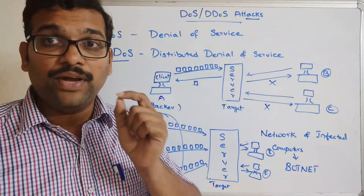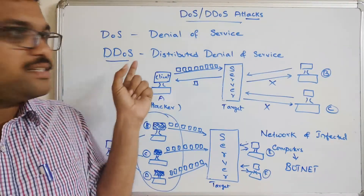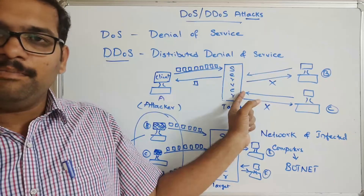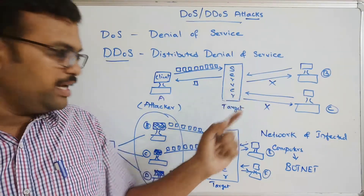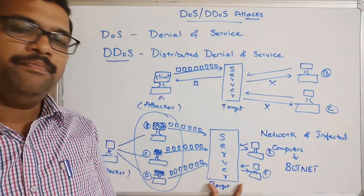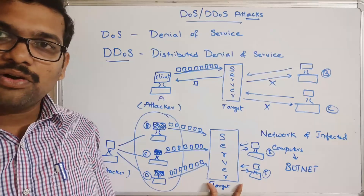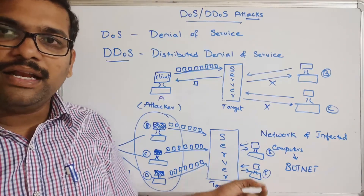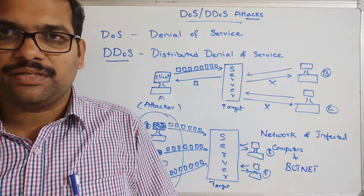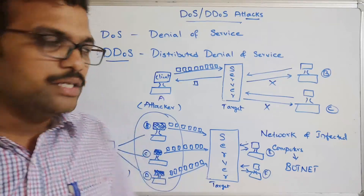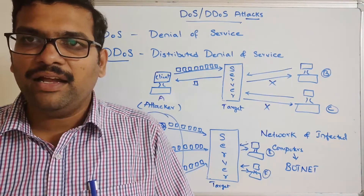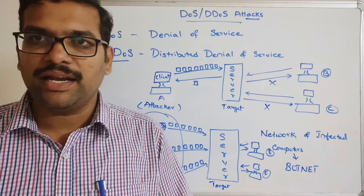To summarize: if a single system targets the victim, that is called DOS; if multiple systems target the victim, that is called DDOS — Distributed Denial of Service. Hope you understood DOS and DDOS attacks.